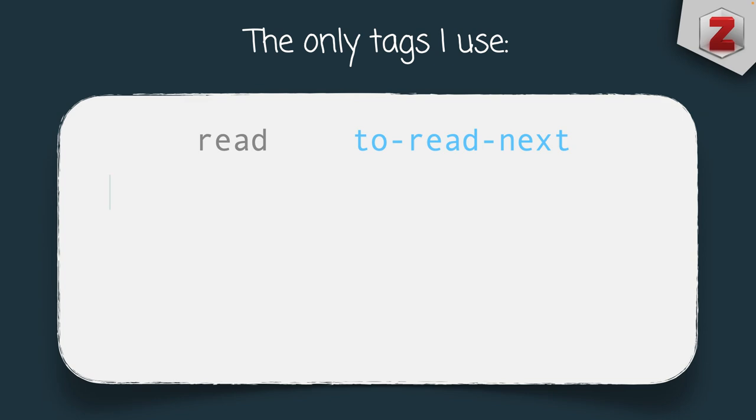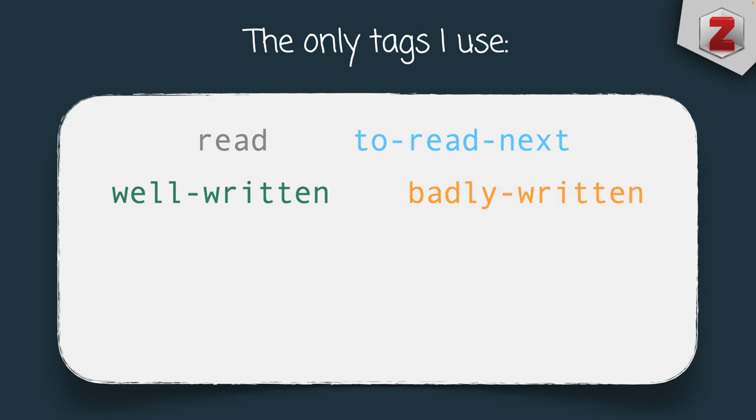I have two interesting tags called 'well-written' and 'badly-written'. I'm very passionate about getting better at academic writing, and whenever I read a publication, I pay special attention to how well it's been written. I try to replicate strategies of clearer academic writing in my own work, and also avoid pitfalls that make writing less accessible. These two tags help me look for inspiration when writing my own manuscript.